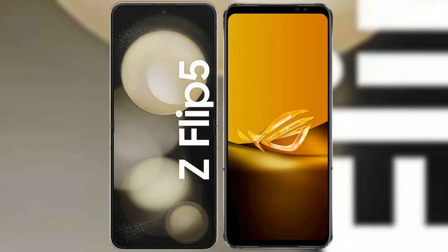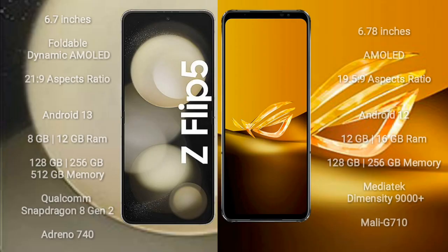I will compare the new Samsung Galaxy Z Flip 5 with the Asus ROG Phone 6D. Samsung Galaxy Z Flip 5 comes with a 6.7-inch foldable dynamic AMOLED display and an aspect ratio of 21.9. Asus ROG Phone 6D comes with a 6.78-inch AMOLED display and an aspect ratio of 19.5:9.